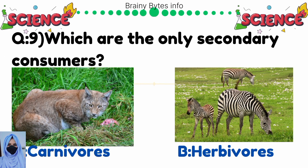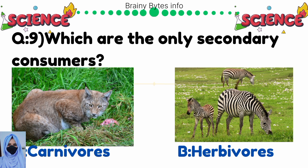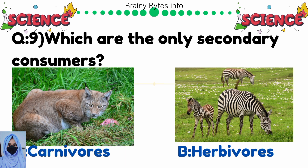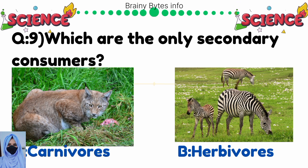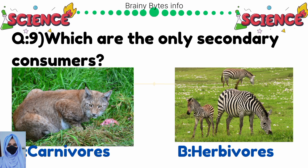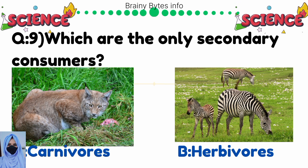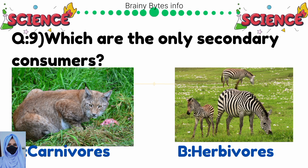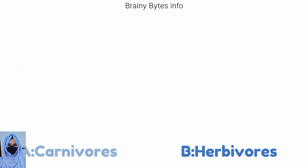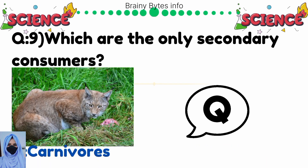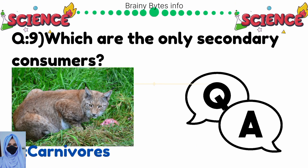Which are the only secondary consumers? Option A: carnivores, option B: herbivores. Correct answer is carnivores.